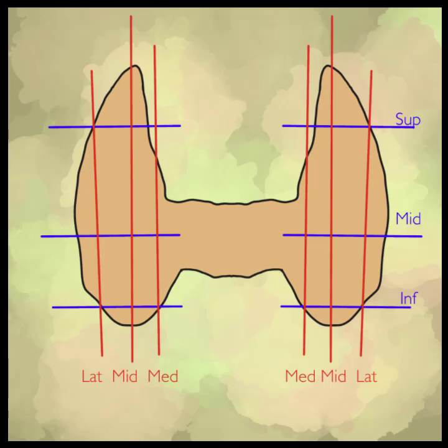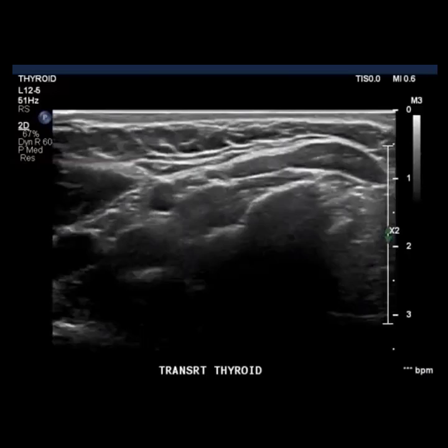The standard thyroid protocol is performed bilaterally. In transverse, the superior, mid, and inferior portions of the thyroid should be imaged. In longitudinal, the lateral, mid, and medial parts will be imaged. Lastly, the isthmus is imaged followed by a bilateral image of the entire thyroid. Color Doppler is used unilaterally and bilaterally to compare vascularity.